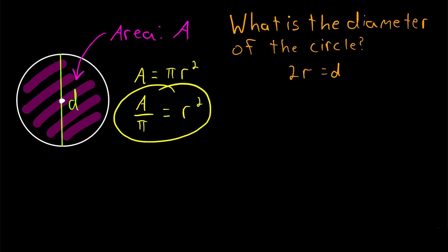Now let's go ahead and take the square root of both sides in order to finish solving for the radius. Thus, we've got that the square root of the area divided by pi is equal to the square root of r squared, which is r.